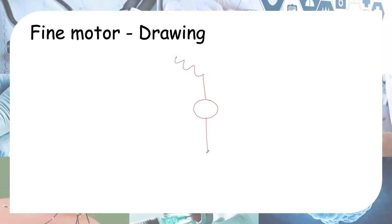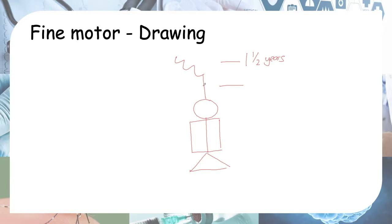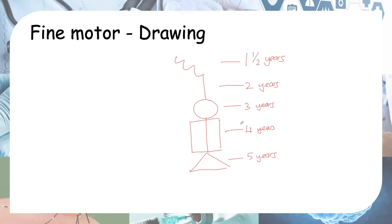The stick figure has a head, body, legs, and hands, and the shape includes a square and a triangle. By one and a half years the child should be able to scribble. By two years, draw a straight line. By three years, a circle. By four years, a square. By five years, a triangle. It's a very useful diagram to remember the fine motor drawing milestones for older children.